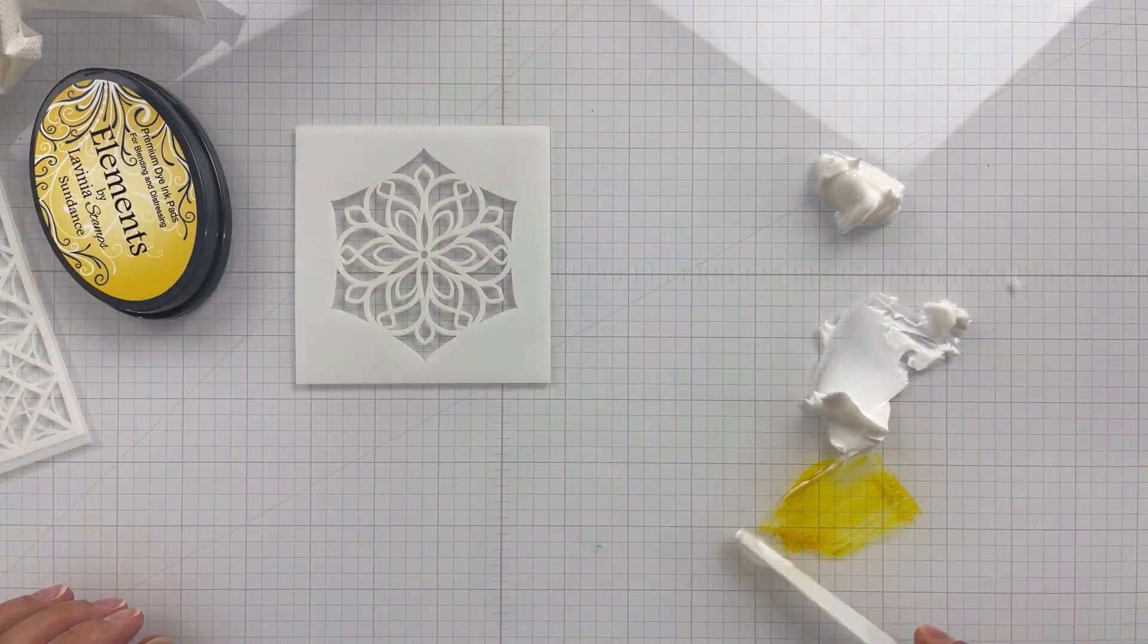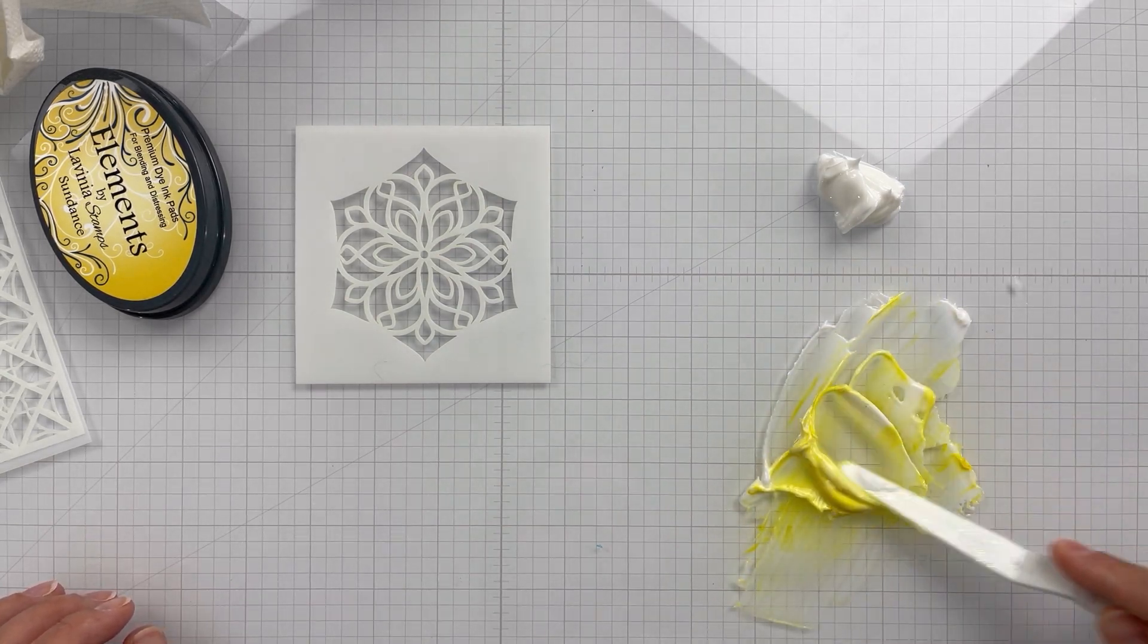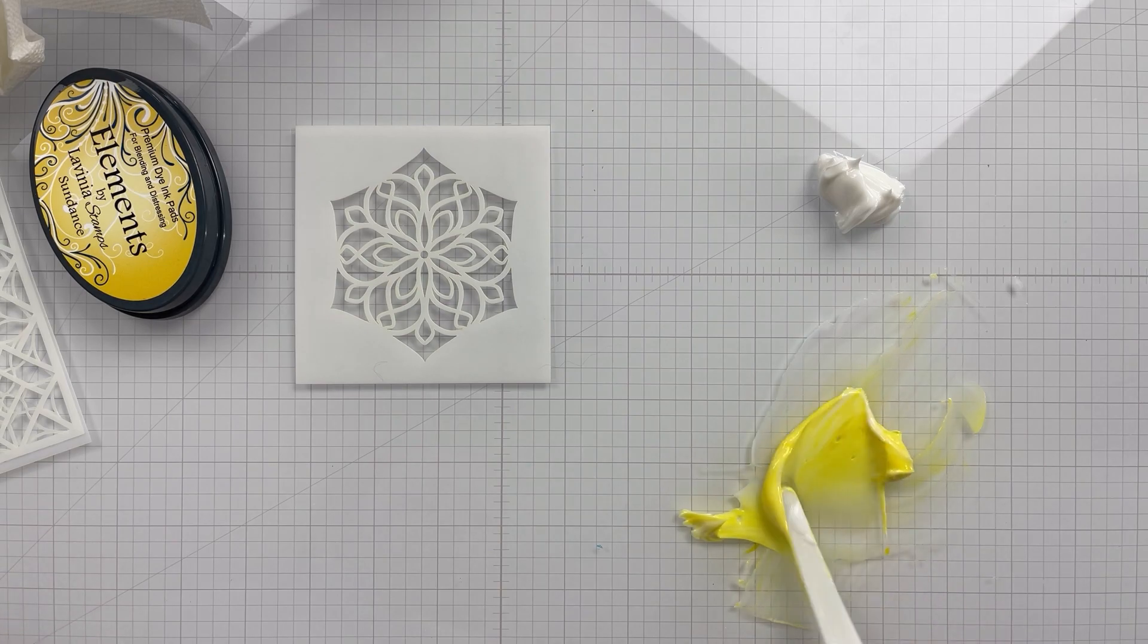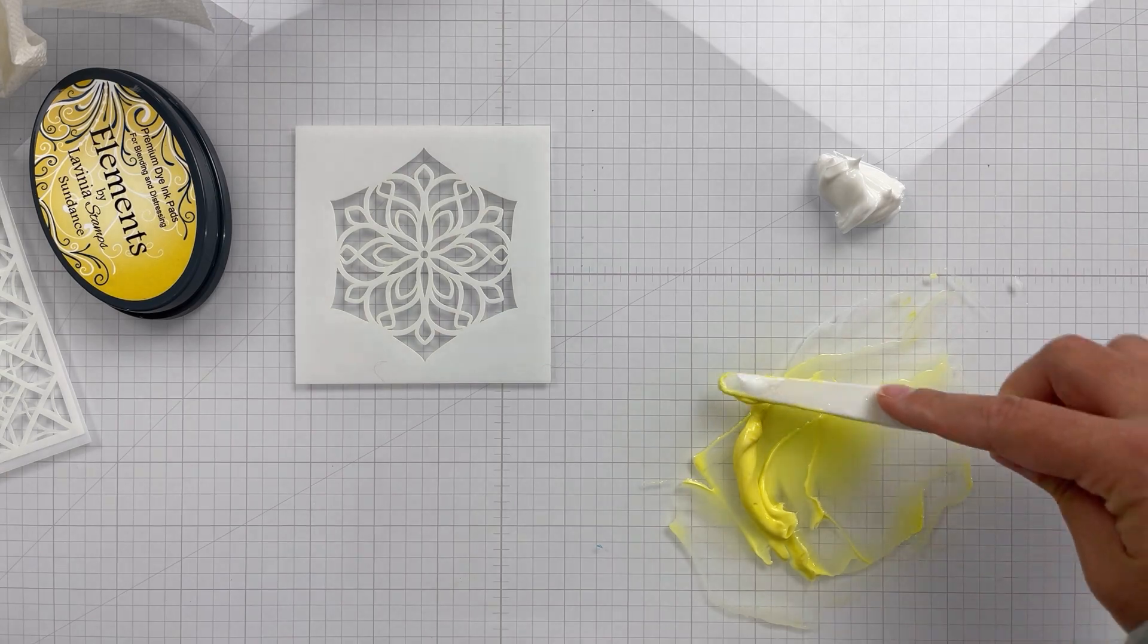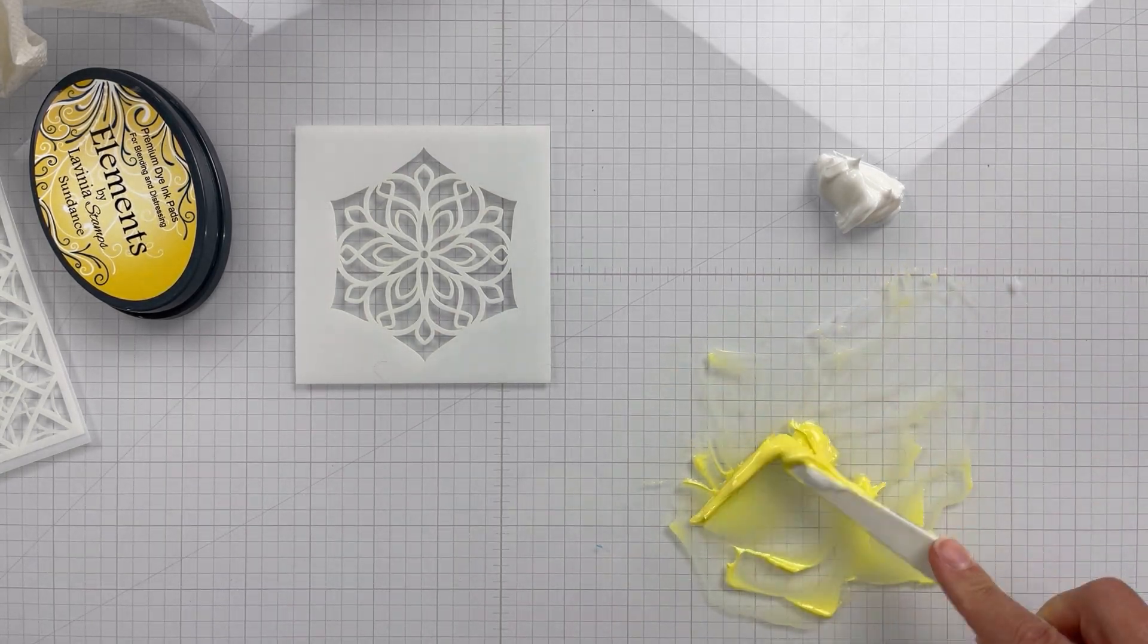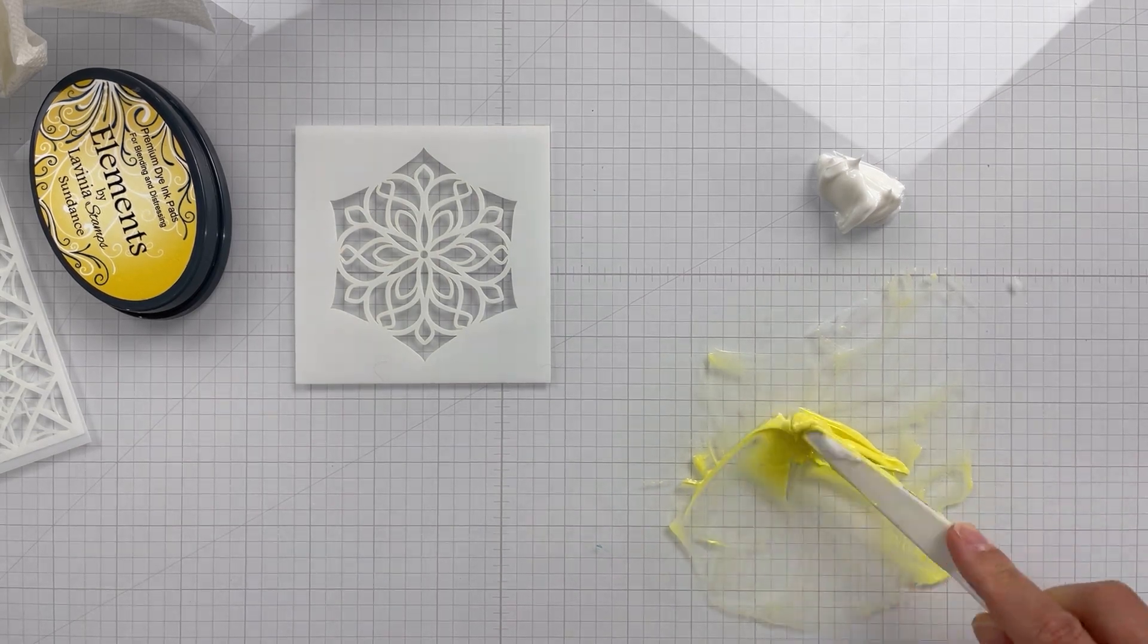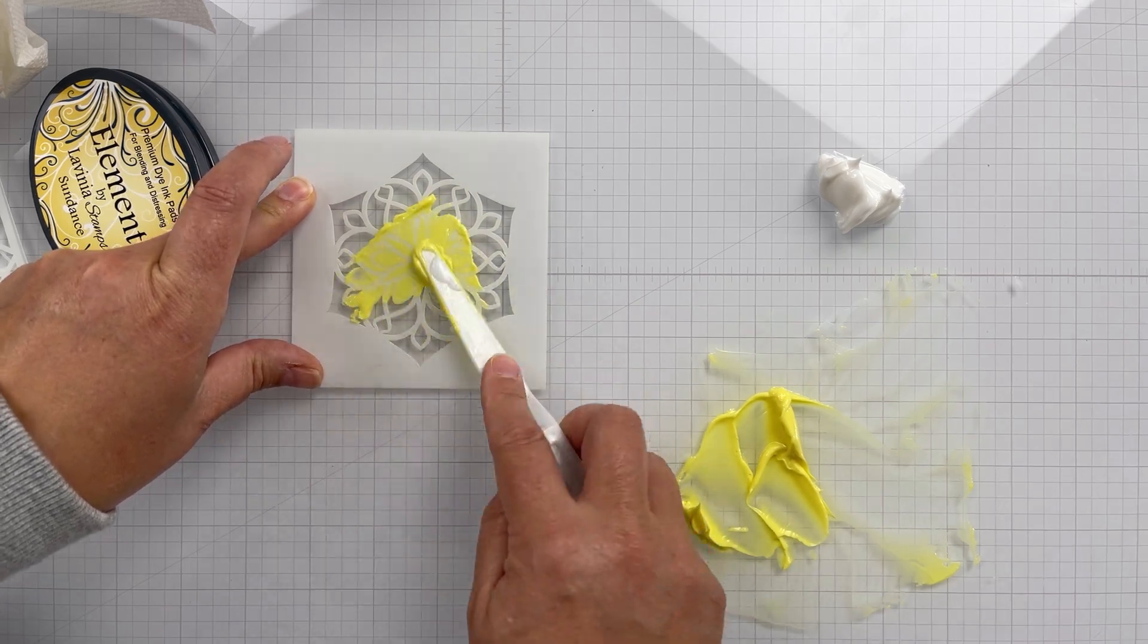The only thing here - you want to use a dye ink. So whatever medium you use to color it, make sure that it's going to dry clear. You could use tubes of watercolor paint because they dry clear. If you have gouache, don't use that. It dries opaque.